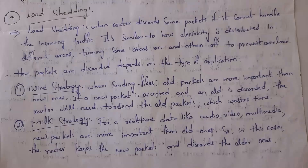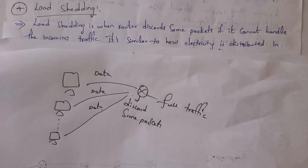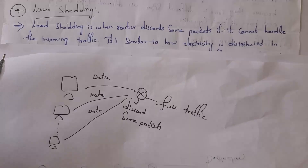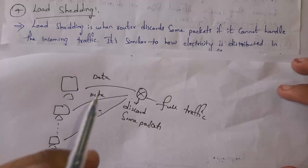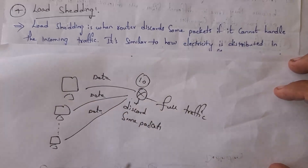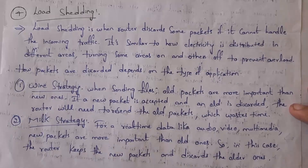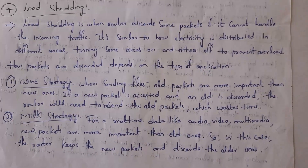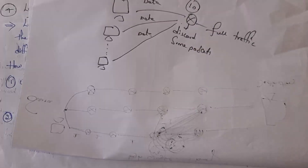The fourth congestion control approach is load shedding. In load shedding, whenever traffic is full — that is, whenever multiple devices send data at the same time — if the router cannot handle that much data, the router will discard some data packets. For example, if a router can handle only 10 packets but 20 packets are received, the router needs to discard 10 packets. The router discards packets based on two techniques: the wine strategy and the milk strategy. In the wine strategy, older packets are more important than newer packets, so newer packets are discarded, just as old wine is considered more valuable.